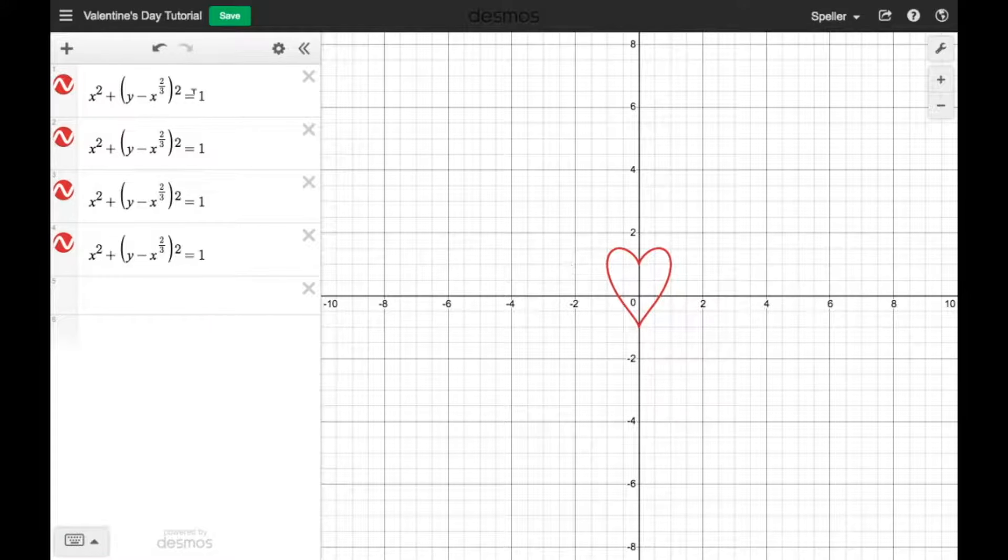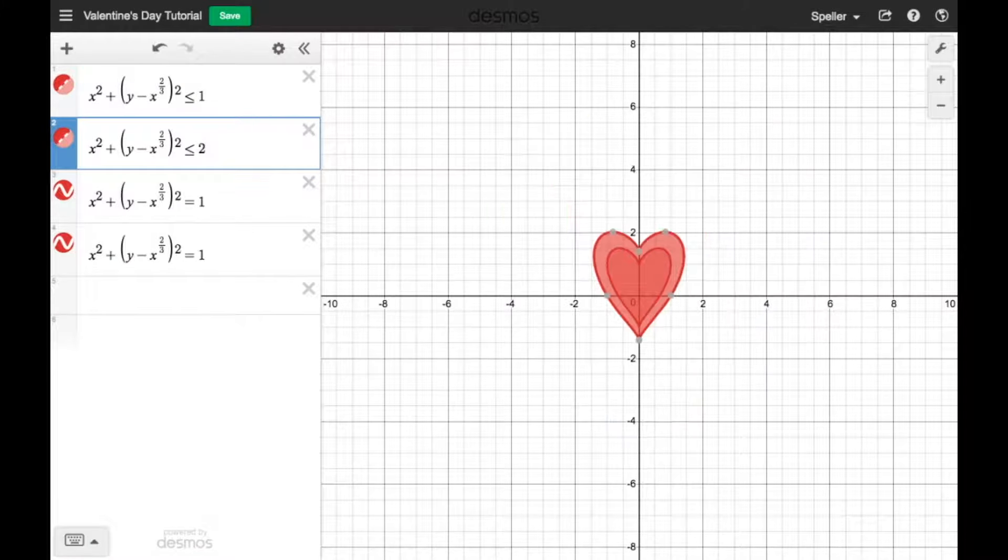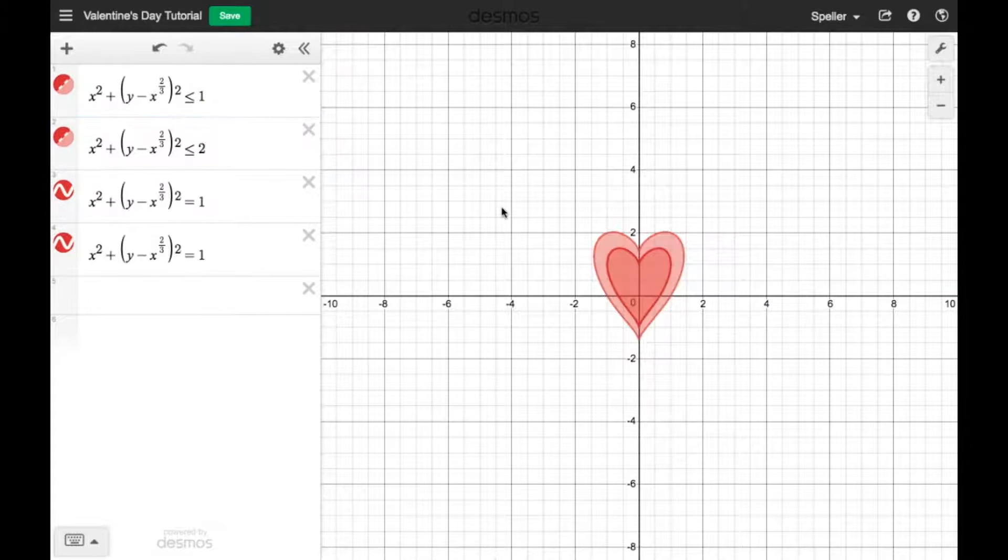But first things first, we want the hearts to be shaded. So let's make this here a less than or equal to. We're going to make it an inequality and this constant here of one changes the size. Let's come to the second one. Let's again make it less than or equal to. And what I want to do is make this one twice as big. So let's make that a two. So here we have, we're seeing the two hearts.